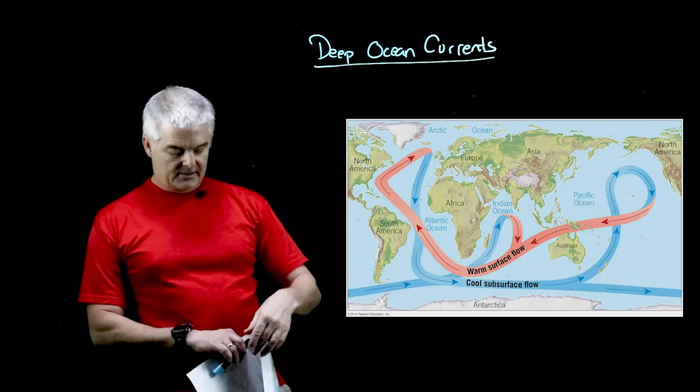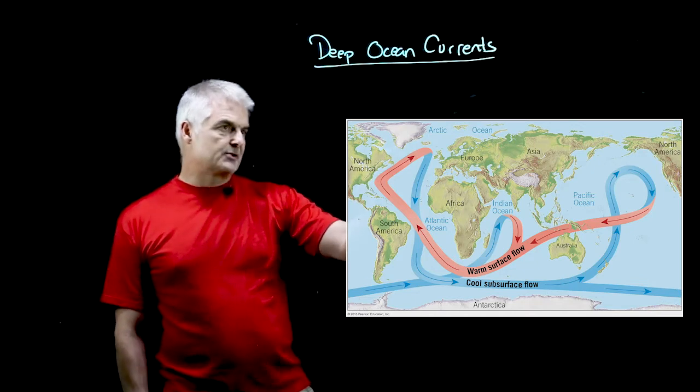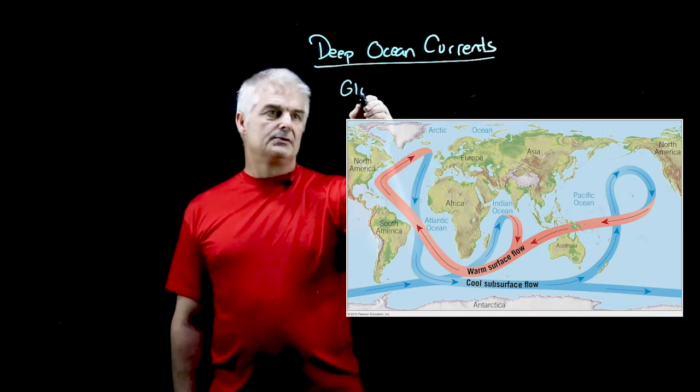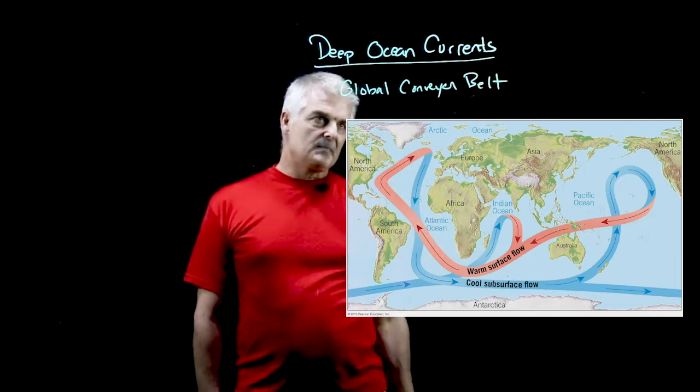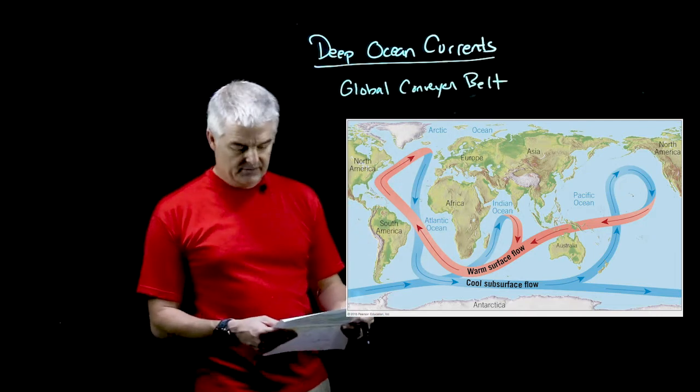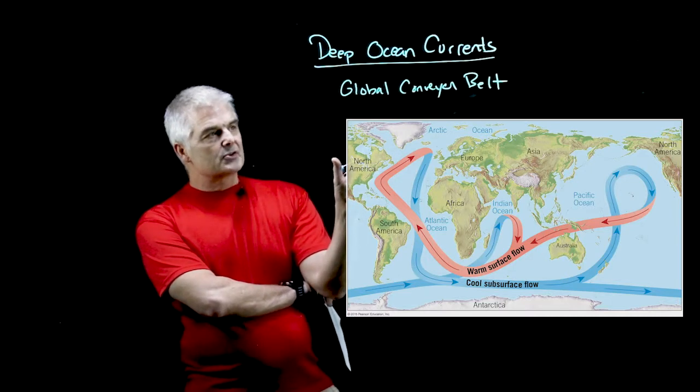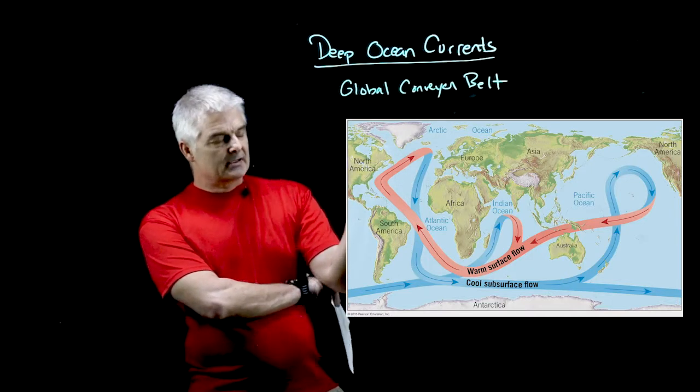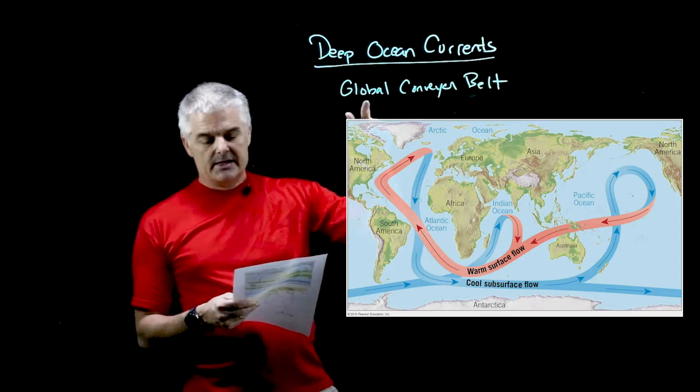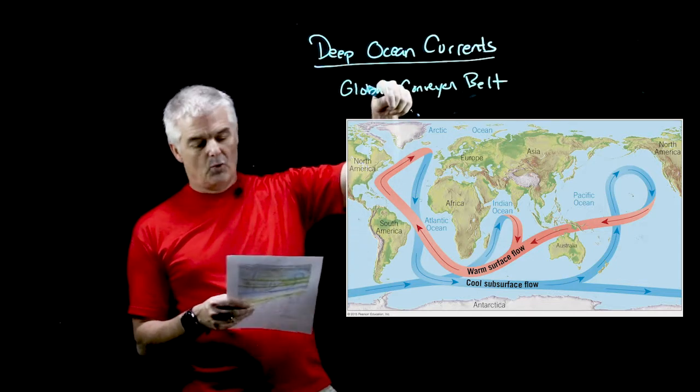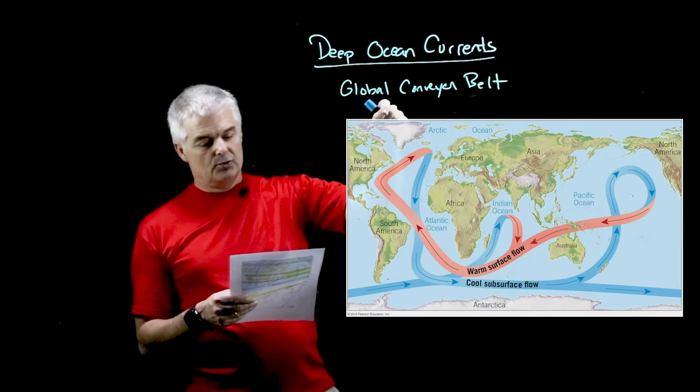And they flow in a very interesting pattern. Let's actually define this. I'll leave this graph up here. This is called the global ocean conveyor belt. Notice that the colors matter here. At the top right up here in North America the water sinks because it's cold.